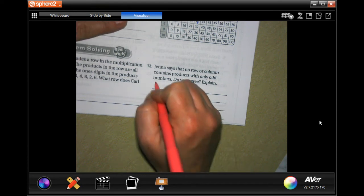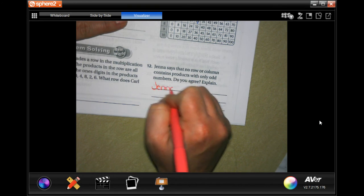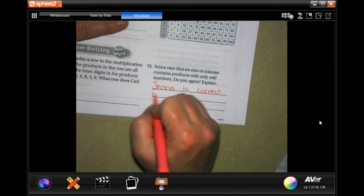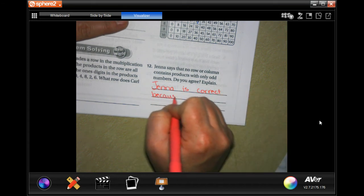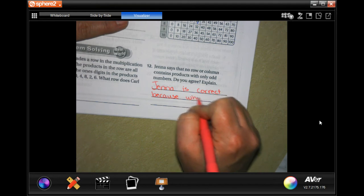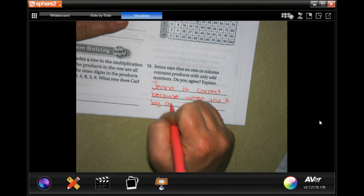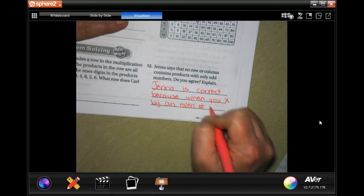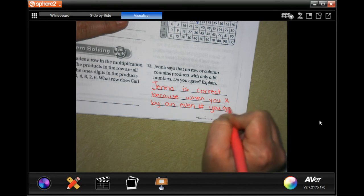So she is correct. Jenna is correct because when you multiply by an even number you get an even number.